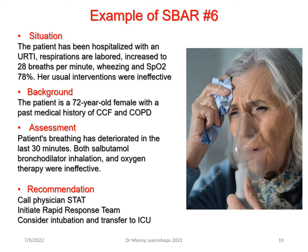Example 7: Situation: The patient has been hospitalised for an upper respiratory tract infection. Respirations are laboured with tachypnea at 28 breaths per minute, wheezing on auscultation, and SpO2 of 78% on pulse oximetry. The usual interventions have been ineffective. Background: This is a 72-year-old female with a past medical history of congestive heart failure and chronic obstructive pulmonary disease. The patient's breathing has deteriorated in the last 30 minutes. Both salbutamol bronchodilator inhalation and oxygen therapy have been ineffective. Recommendation: I think we should call the physician immediately, and be prepared to activate the rapid response team. Consider intubation and transfer to the ICU after the physician or rapid response team has reviewed her.